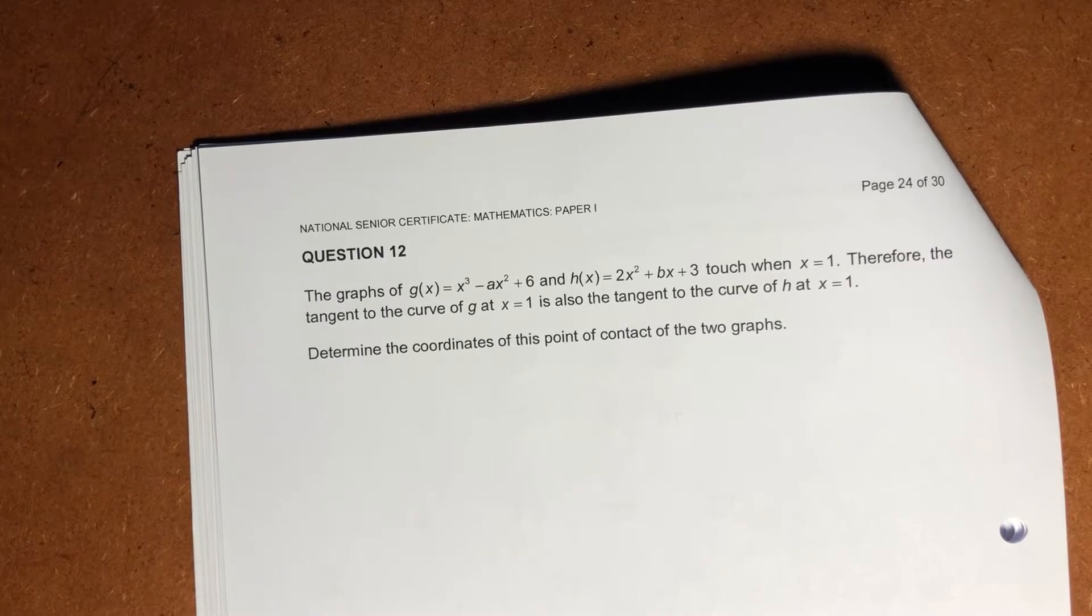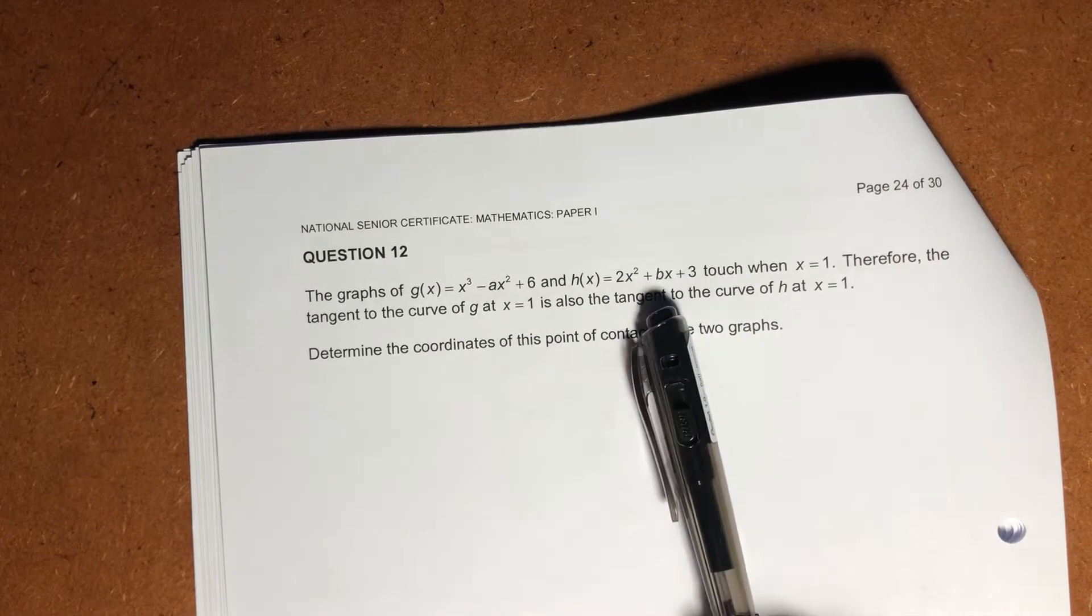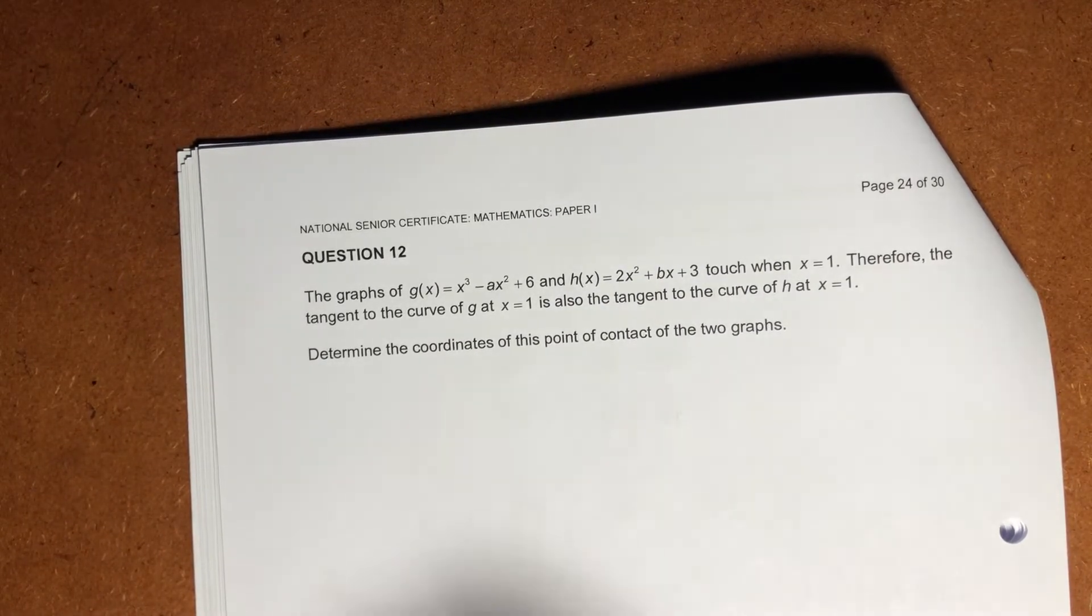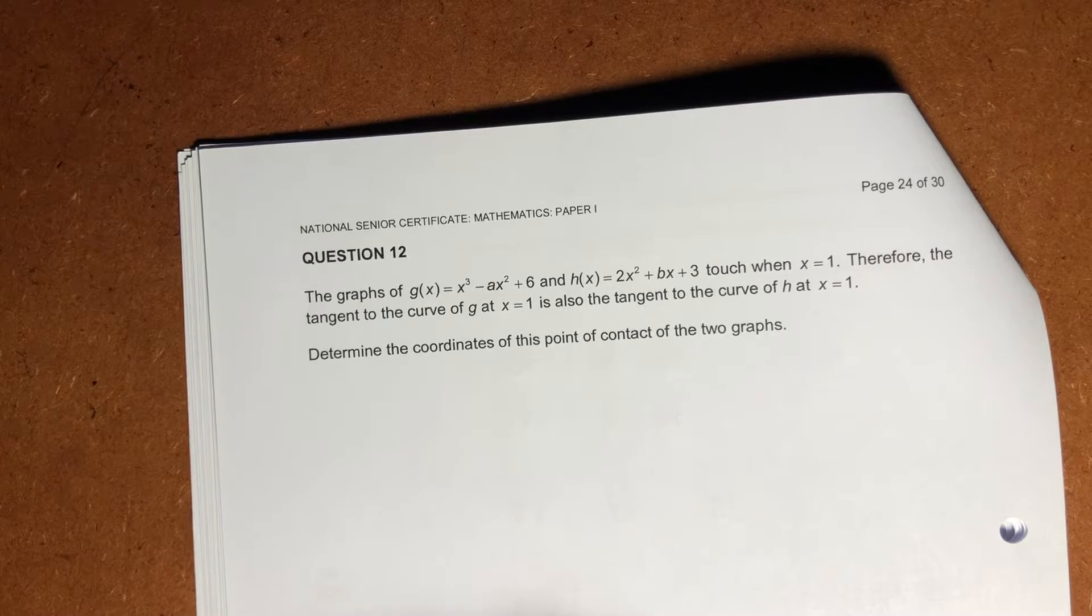Okay, the graphs of g of x, which is a cubic, and h of x, which is a parabola, touch when x equals 1. So basically there's a point of intersection. It then says, therefore, the tangent to the curve of g at x equals 1 is also the tangent to the curve at h.